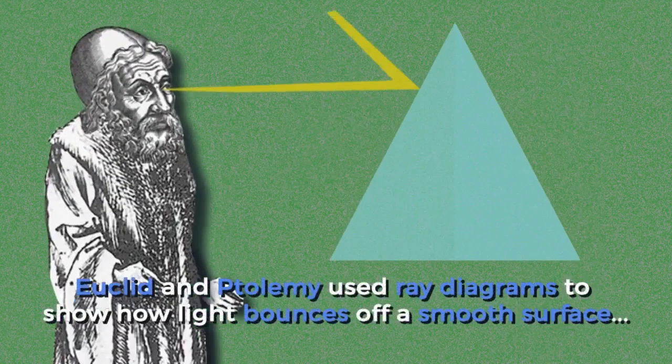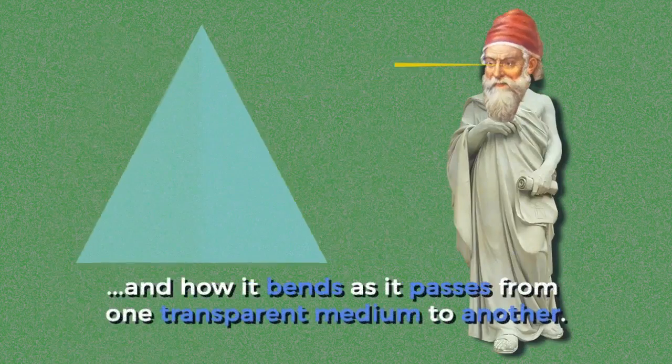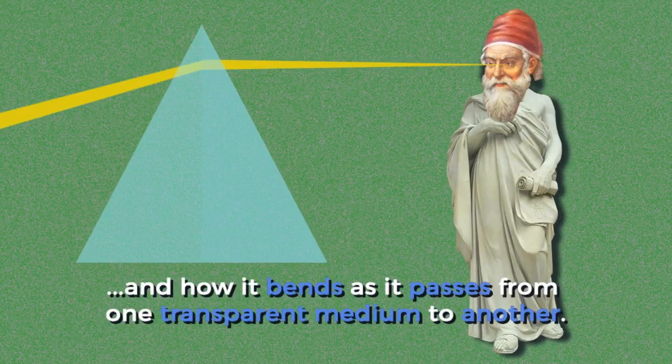Euclid and Ptolemy used ray diagrams to show how light bounces off of a smooth surface and how it bends as it passes from one transparent medium to another.